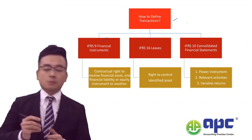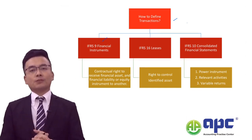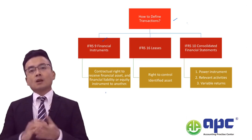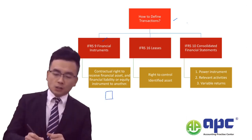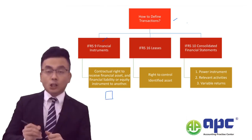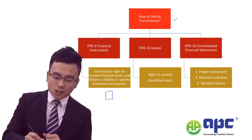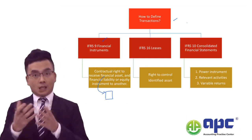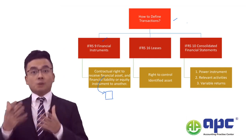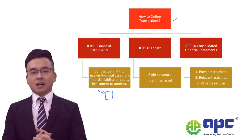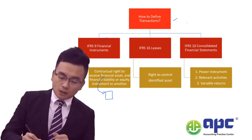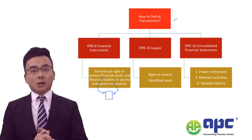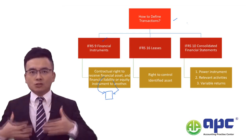Firstly, IFRS 9 financial instruments. According to IFRS 9, a financial instrument is a contract giving rise to one party receiving a financial asset — for example, in the form of cash — and at the same time, to another party it will create a financial liability, which means it has an obligation to pay cash.